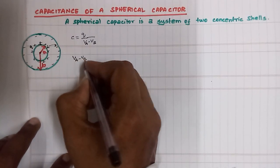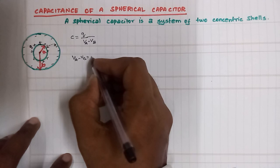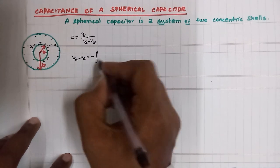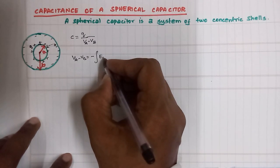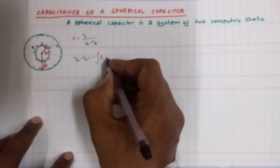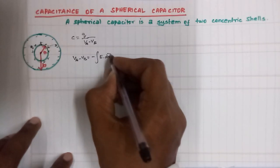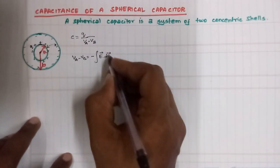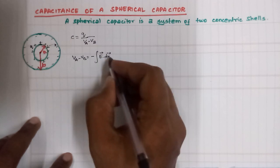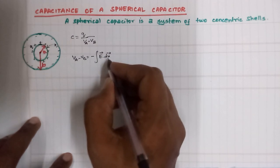So, Va minus Vb — this is our general formula: minus the integral of E dot dx. If you have a dot product, again, E dot dx.